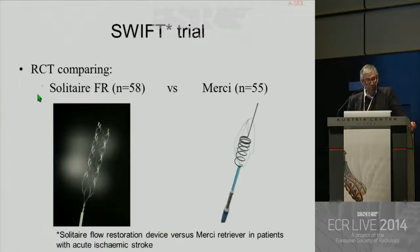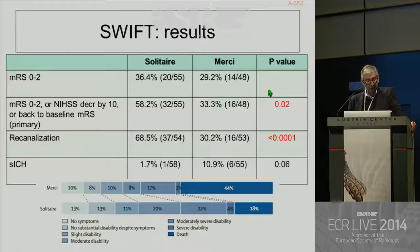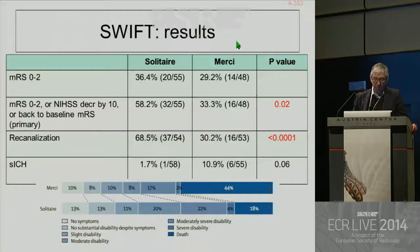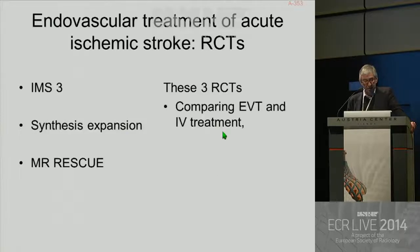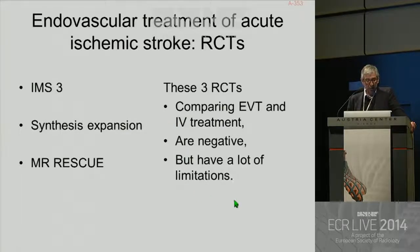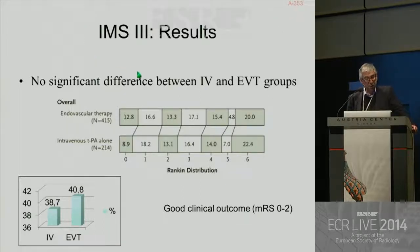There was a trial comparing second-generation devices to first-generation devices showing the superiority of stent retrievers: good clinical outcome was more frequent with second-generation devices in 58% of cases compared to 33% with Merci. The rate of recanalization with second-generation devices was also higher. However, endovascular treatment was evaluated in three RCTs published around 2013 — IMS3, Synthesis Expansion, and MR RESCUE — and all three were negative, though they had important limitations.